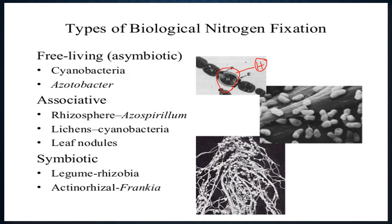If there is nitrogenase enzyme, nitrogen is converted to ammonia. The nitrogenase enzyme works best only in the absence of oxygen — oxygen actually blocks or inhibits the conversion of nitrogen into ammonia.